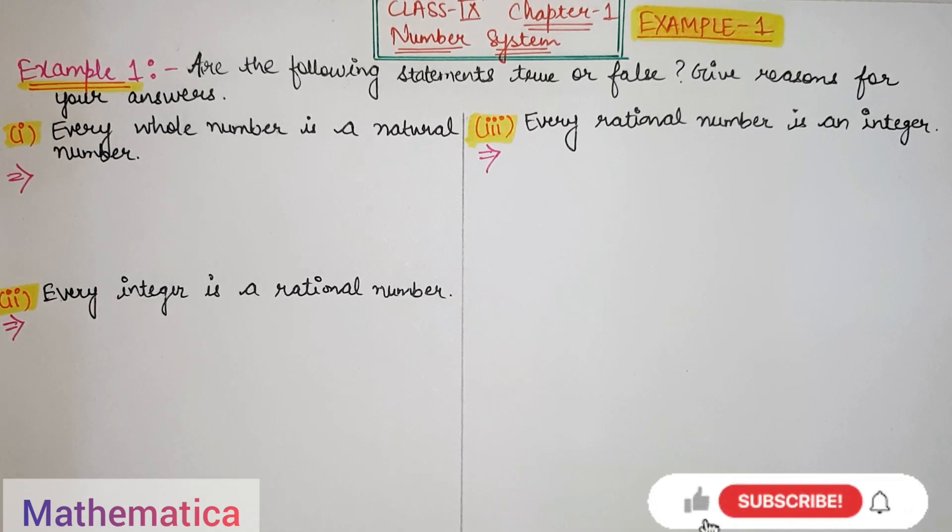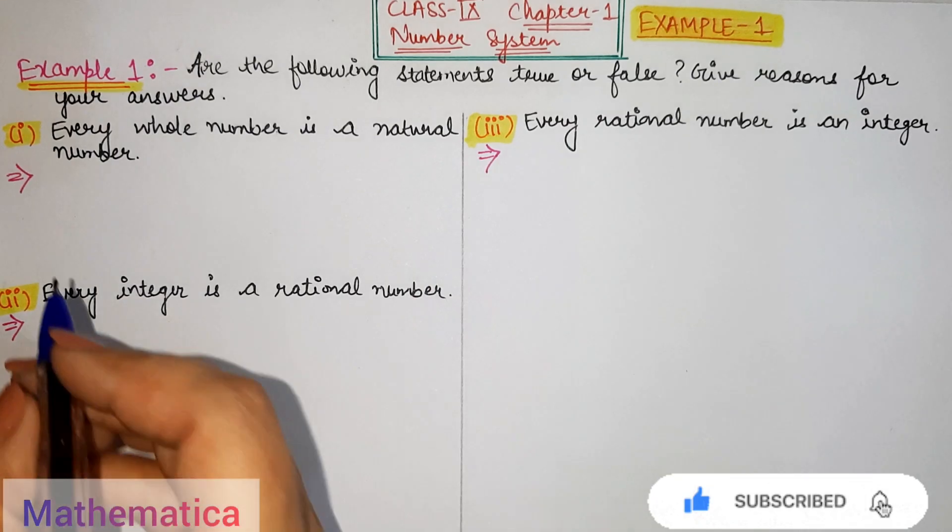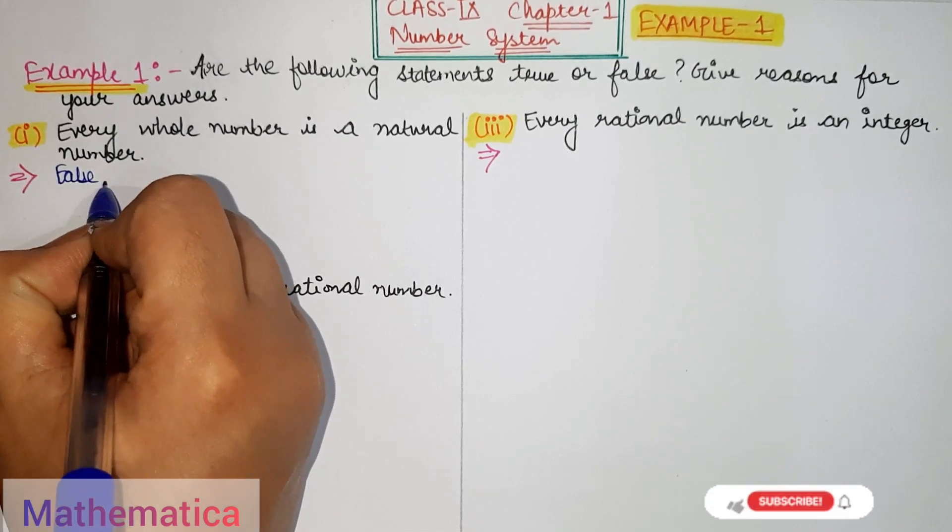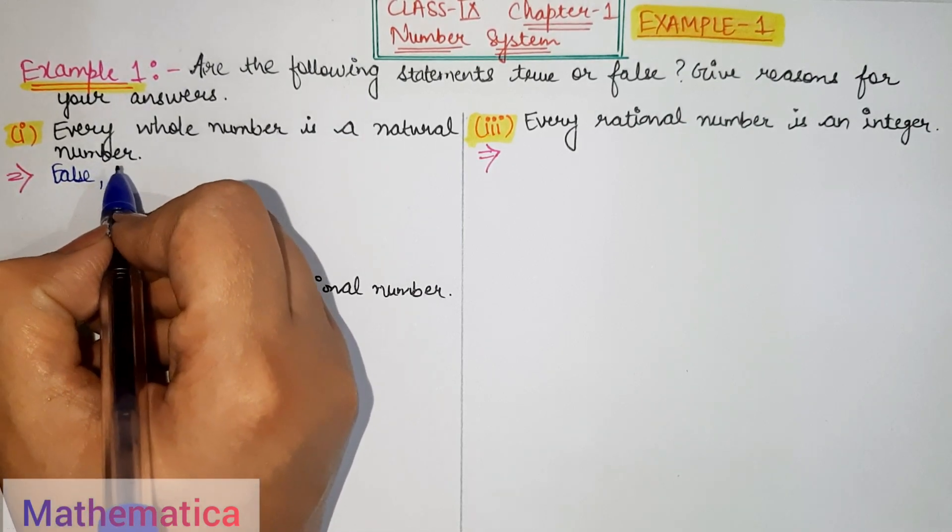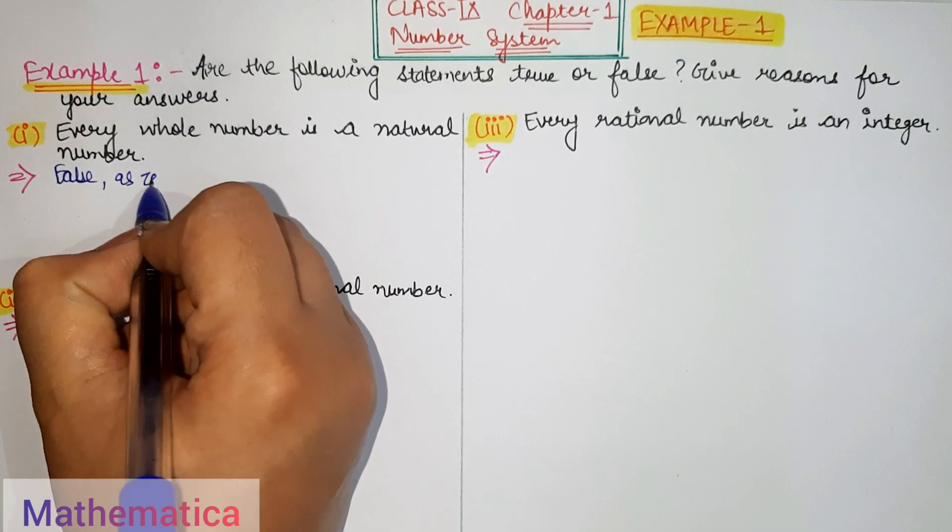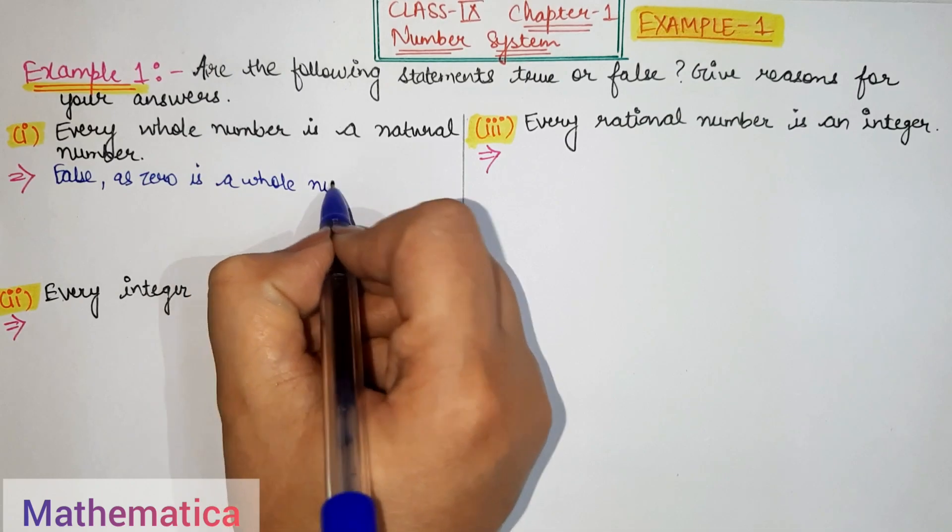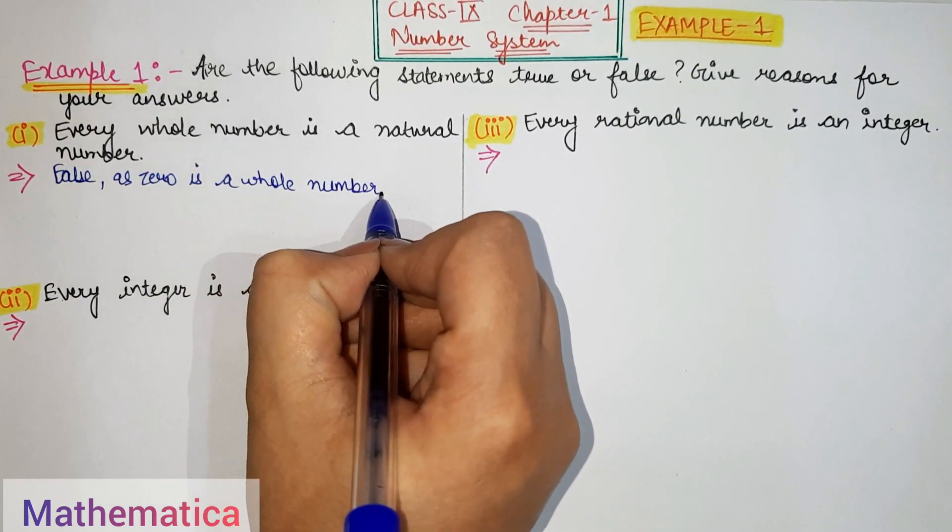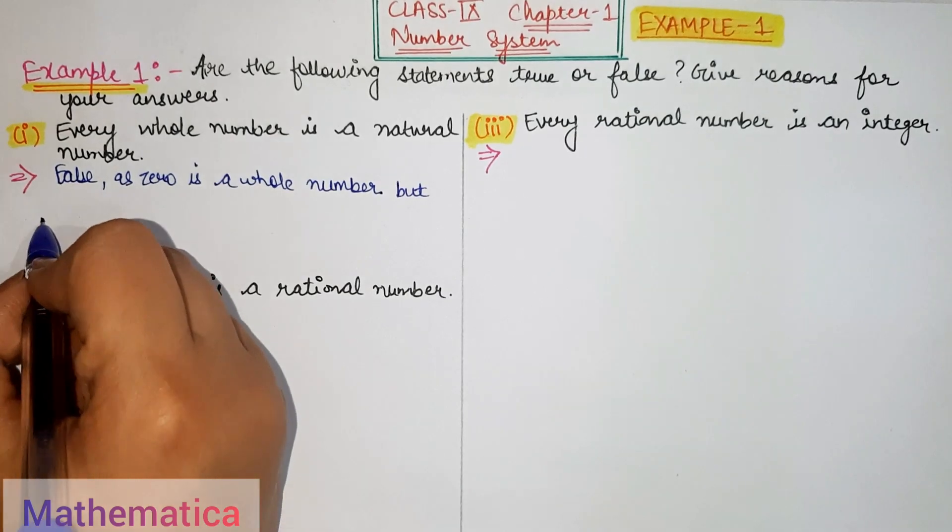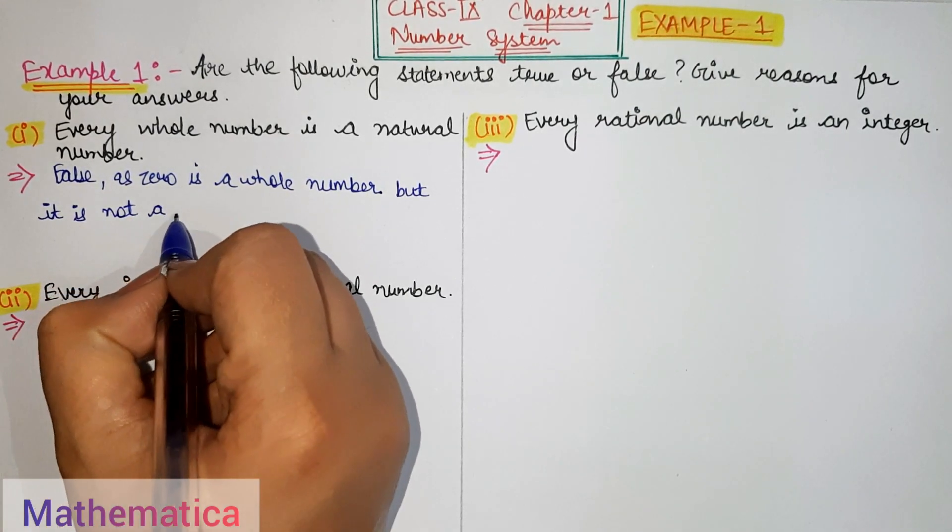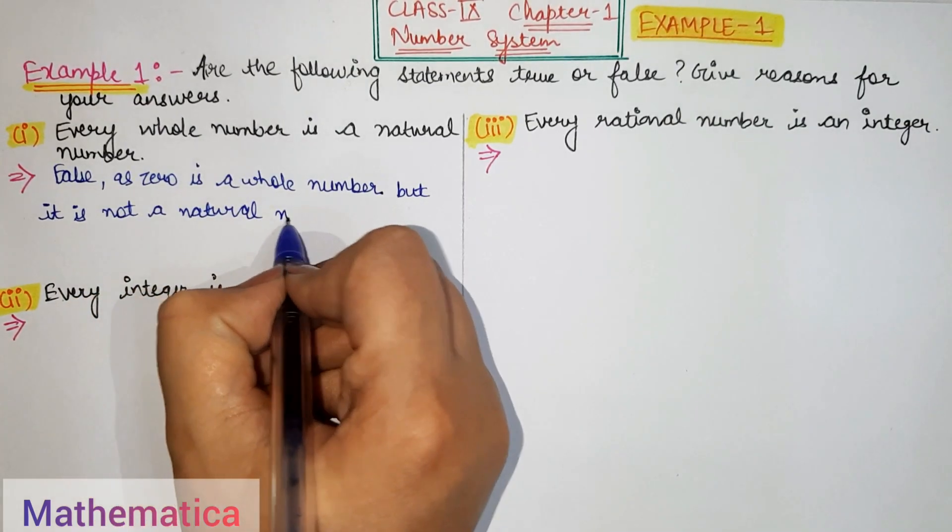So what we get from the answer? This answer is false. Why? As zero is a whole number but it is not a natural number.